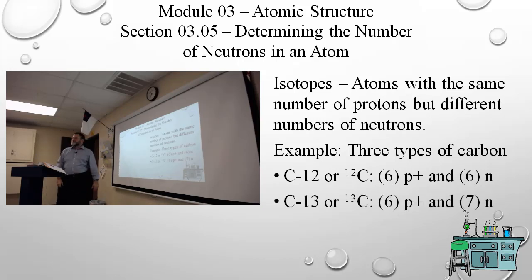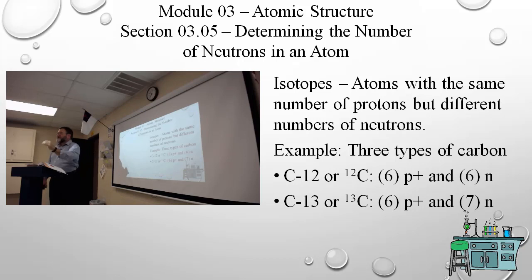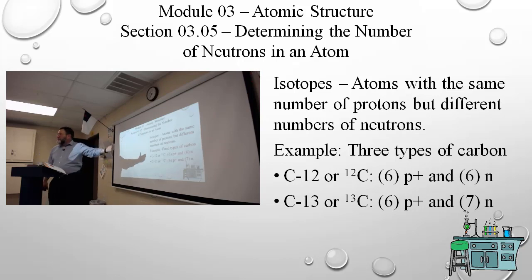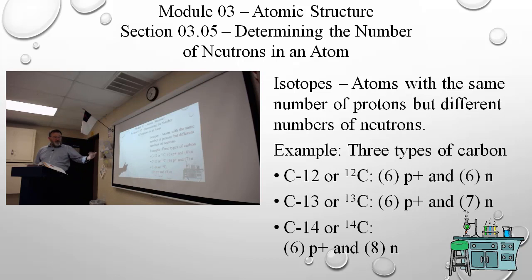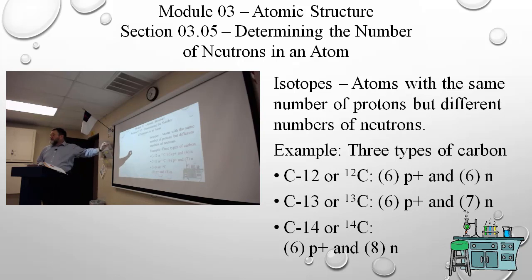Next is carbon-13. The number of protons has to be 6, because if it's not 6, it's not carbon. The mass is 13; I take 6 away for the number of protons, so there are 7 neutrons. And lastly, carbon-14 has 6 protons and 8 neutrons. The number of protons has to be the number for that element — that's fixed. The number of neutrons can vary.